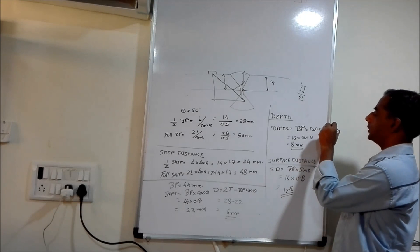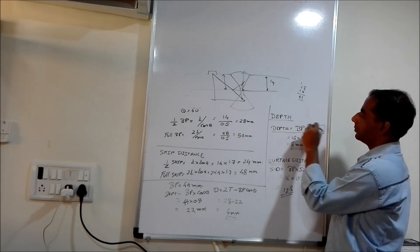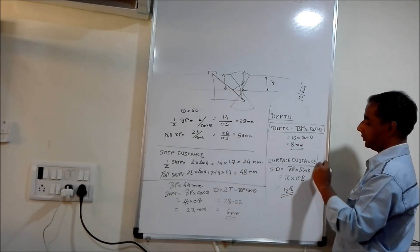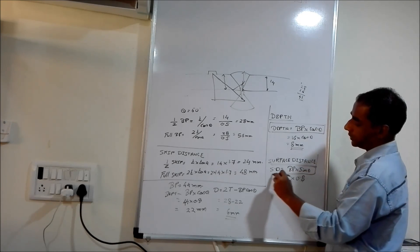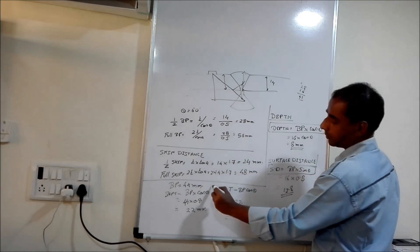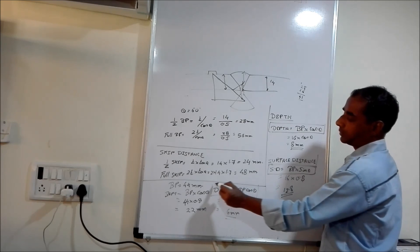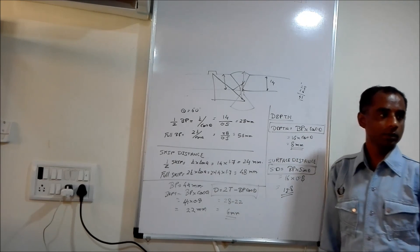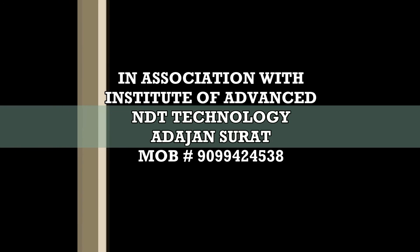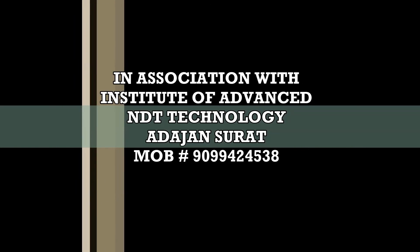Now we have got 3 formulas. One is the depth formula. Second is surface distance. And this is depth at second leg, that is: 2t minus bp cos theta.